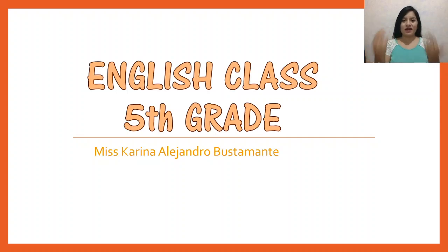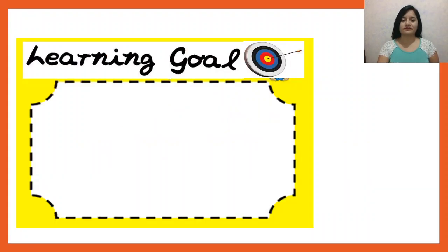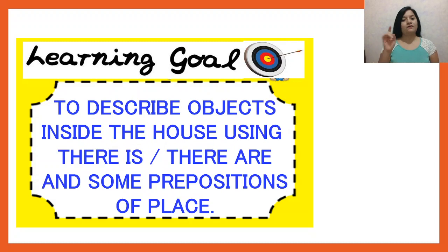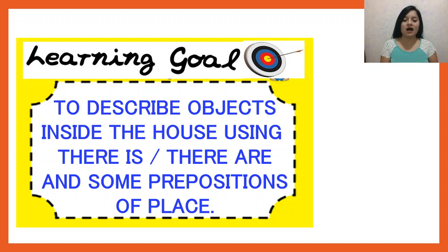Hello everybody! Now let's review some vocabulary and also some grammar. First, it's important to remember our learning goal. Our learning goal is to describe objects inside the house using 'there is', 'there are', and some prepositions of place. So, let's get started.